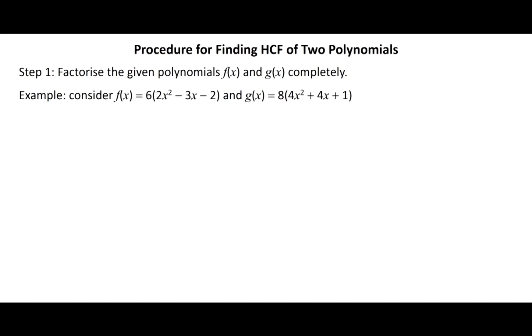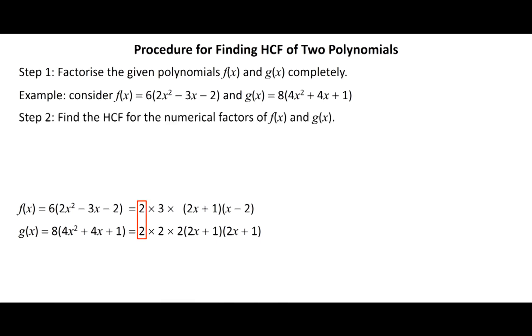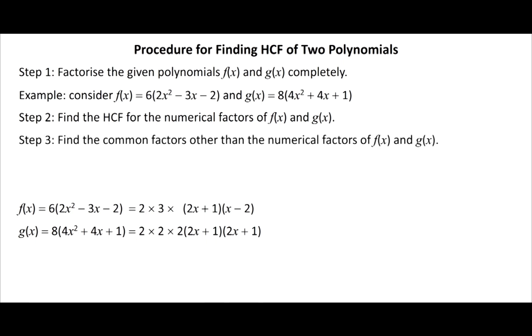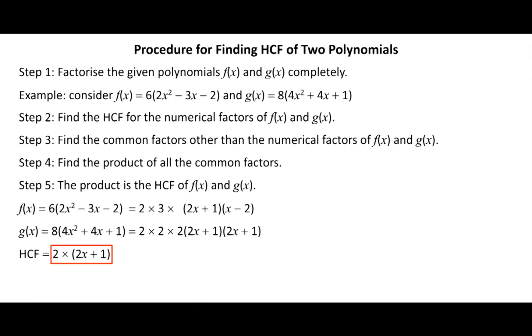To find the HCF by factorization: Step 1 — factorize the given polynomials F(x) and G(x) completely. For example, F(x) equals 6 times (2x squared minus 3x minus 2) and G(x) equals 8 times (4x squared plus 4x plus 1). Step 2 — find the HCF of the numerical factors. Step 3 — find the common factors other than numerical factors. Step 4 — find the product of all such factors. Step 5 — the product is the HCF of F(x) and G(x).